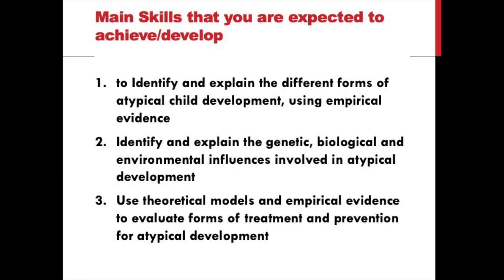There are three main objectives or skills that you are expected to achieve during this module. First, to be able to identify and explain different types of atypical child development. In all cases, you will need to look at empirical evidence and back up all your information with empirical evidence. The second objective is to think in three levels of analysis: biological or genetic, environmental, and then at a more social or community-based level.